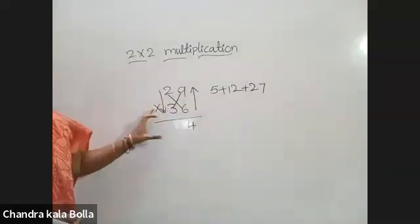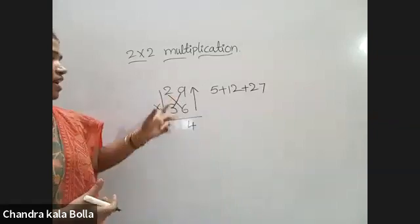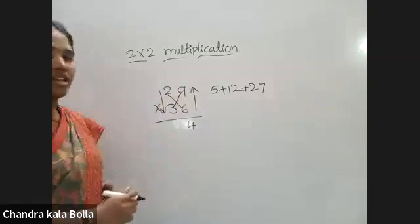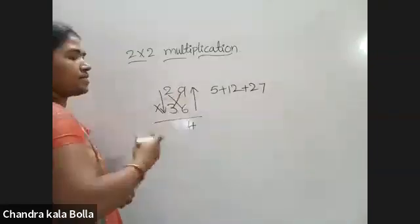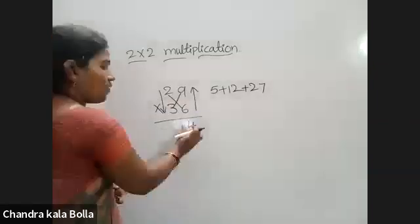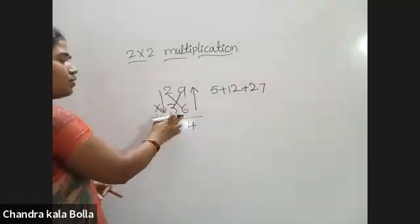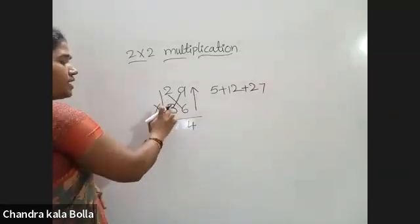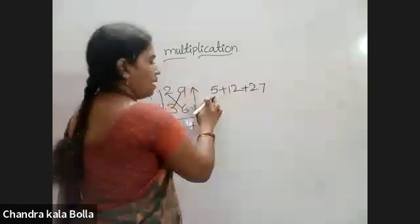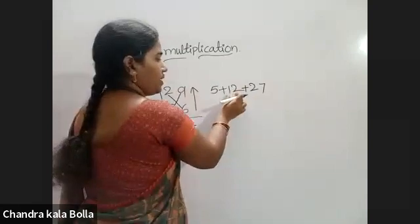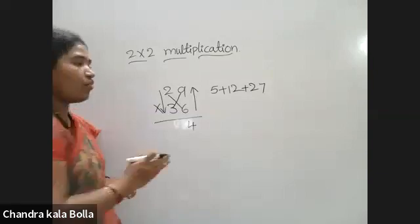In 2x2 multiplication, the ones place value is found in the up or down direction: 6 nines are 54. Next, cross multiplication: 2 sixes are 12, and 3 nines are 27. We add these: 12 plus 27 is 39, plus the carry 5 gives 44. Wait — 5 plus 12 is 17, then 17 plus 27 is 44.